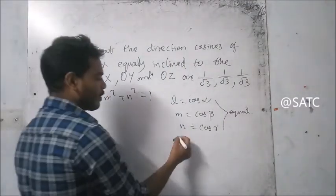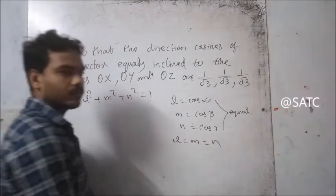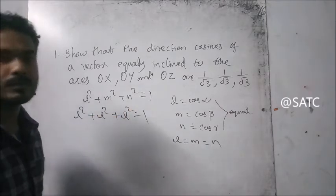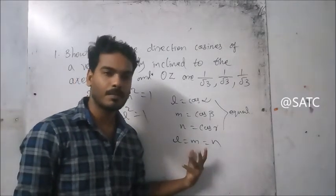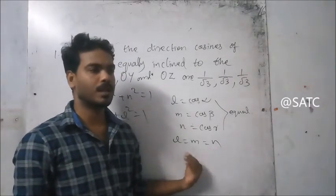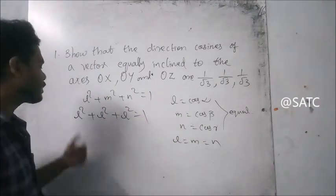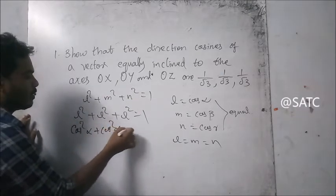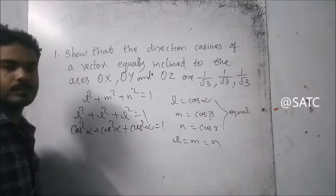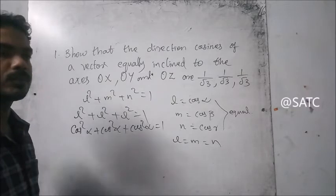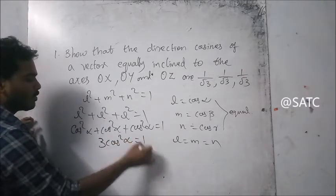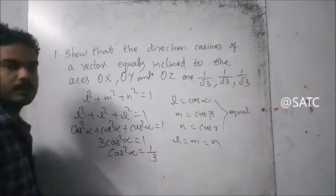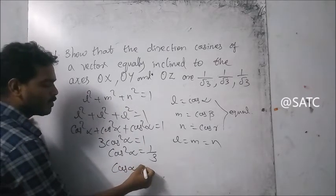L is equal to M is equal to N. So L squared plus L squared plus L squared equals one. That gives us 3 cos squared alpha equals one. So cos squared alpha is equal to one by three. Then cos alpha is equal to root of one by three, that is one by root three.